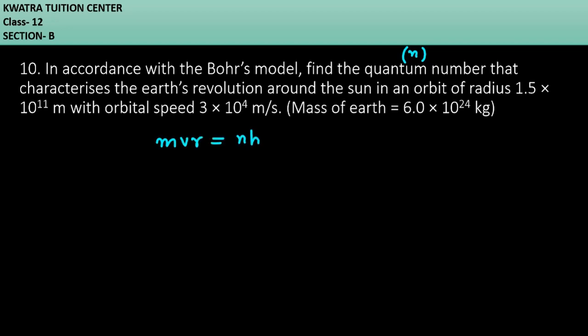mvr is equal to nh over 2π. Now, you have the h value. 2π is constant. You need to find the n value. m has a value, v has a value, r has a value — you have all the values. Just substitute them into this equation and find the value of n.